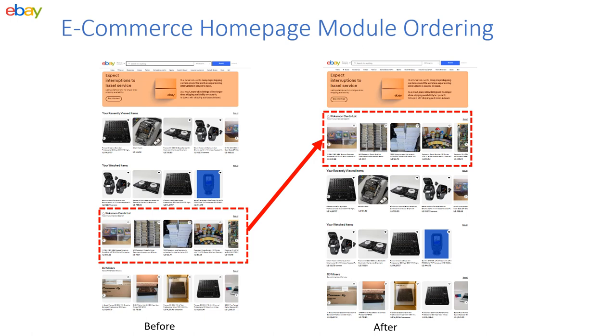Each module presents a ranked list of personalized items that cover some facets of the user's journey — for example, recommendations related to users' recently viewed items, searches, or purchases.